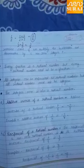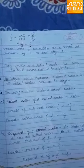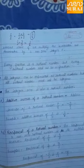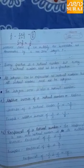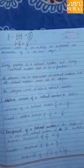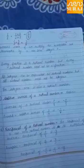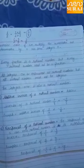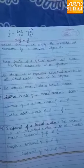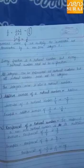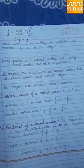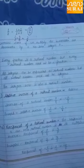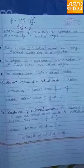Every fraction is a rational number, but every rational number need not be a fraction. All integers can be expressed as rational numbers, but all rational numbers need not be integers. The integer 0 is also a rational number.